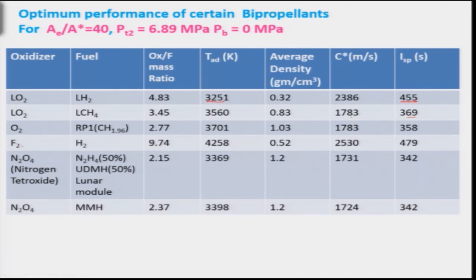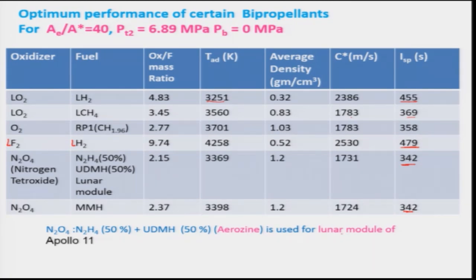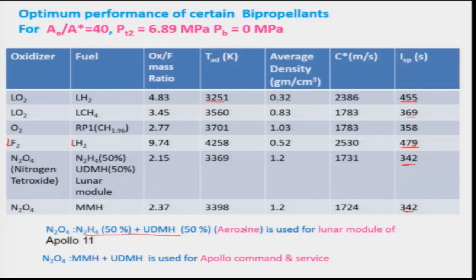If you look at liquid fluorine and liquid hydrogen, you will get a very high specific impulse of 479 seconds — not being used very much, but maybe in future when better materials are developed. Nitrogen tetroxide with a mixture of hydrazine and UDMH (50/50), used in the lunar module, can give an ISP of around 342 seconds. Nitrogen tetroxide and MMH also gives 342 seconds; this combination used in the Apollo 11 lunar module is known as Aerozine. Nitrogen tetroxide with MMH/UDMH is used in the Apollo command and service module.